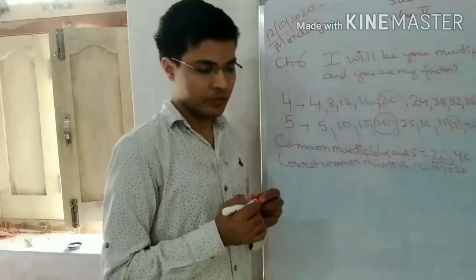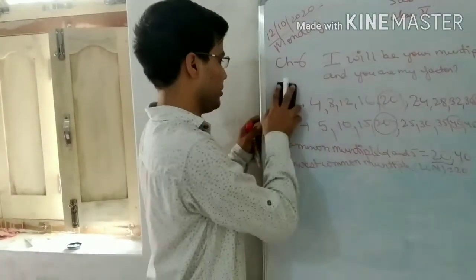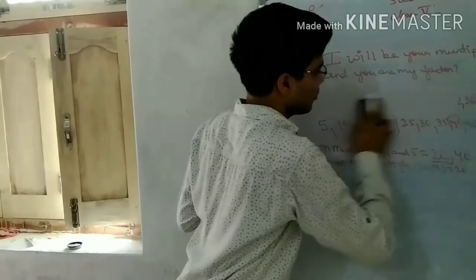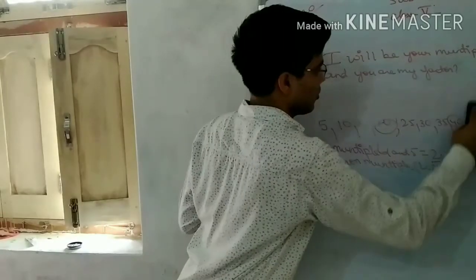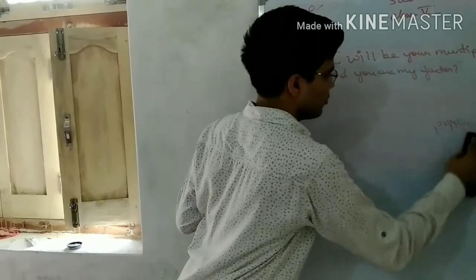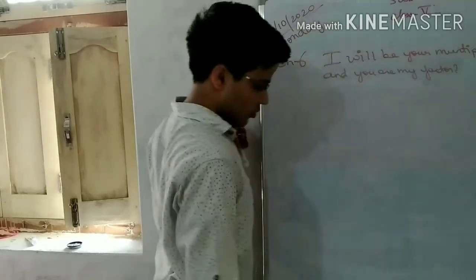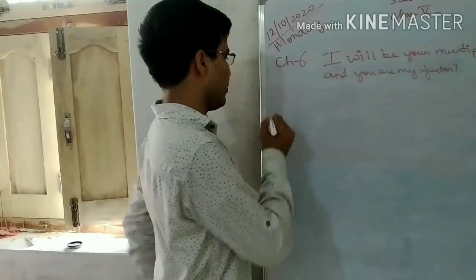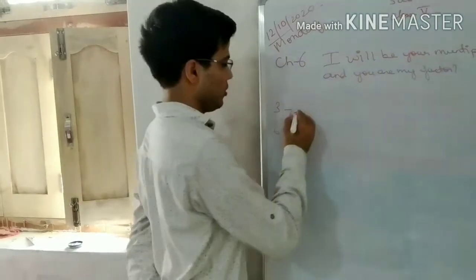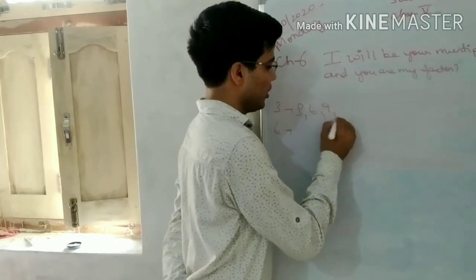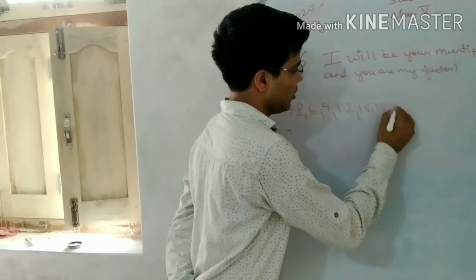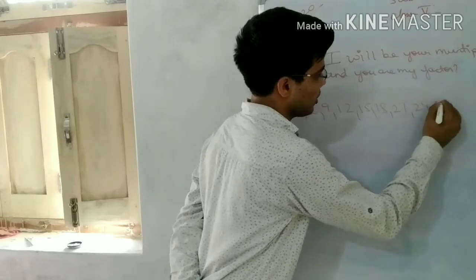I think this is clear. We will deal with another example. Let's find the common multiple of 3 and 6. In the table of 3: 3, 6, 9, 12, 15, 18, 21, 24, 27, and 30.